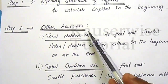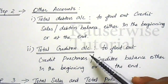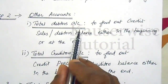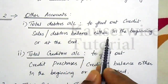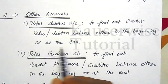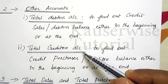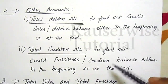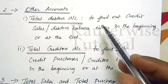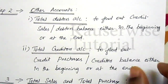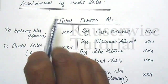Step two involves other accounts. There are two accounts: the first one is the total debtors account and the second one is the total creditors account. The total debtors account is essential to find out credit sales or debtors balance either at the beginning or at the end. The total creditors account is required to find out credit purchases or creditors balance either at the beginning or at the end. Let us now see the format of the debtors account and creditors account.